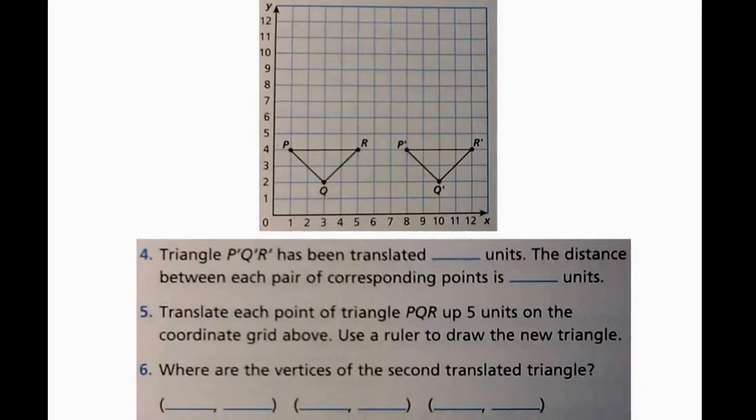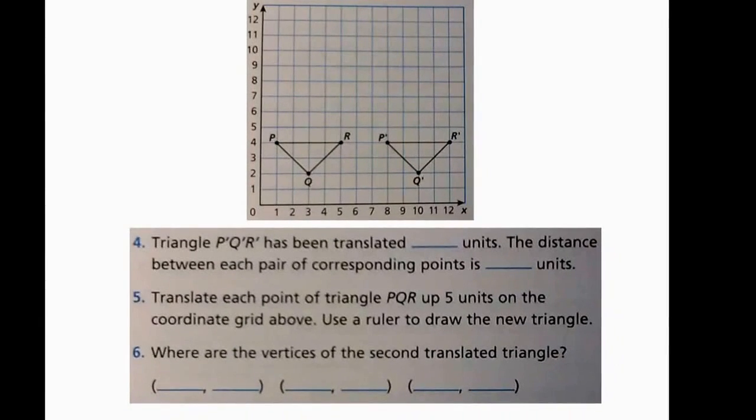On this slide, we have the same image from before, so we're just summarizing what we learned from the previous slide. So we know that triangle PQR has been translated 7 units. Now, remember, we counted that and looked at the ordered pairs to decide that it translated to the right 7 units. So now we know the distance between each pair of corresponding points. What that means, the distance from the first P to the second, the first R to the second R, and the first Q to the second Q is 7 units.